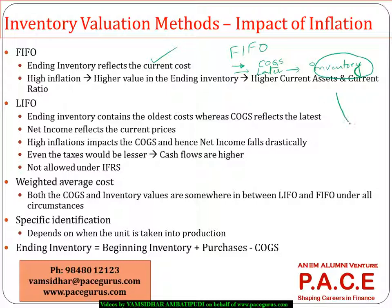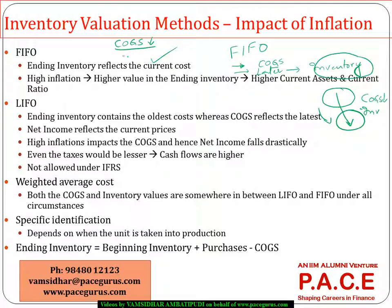In case of inflation, especially when prices are going up, the earlier prices go into cost of goods sold, so cost of goods sold may be lesser. The inventory accommodates the later-purchased goods, and because of inflation those goods cost very high. When using the FIFO-based valuation method, cost of goods sold will be lesser, meaning profit before tax is higher. Higher profit before tax means tax can also go higher, and finally the profit after tax — net income — may also go higher.